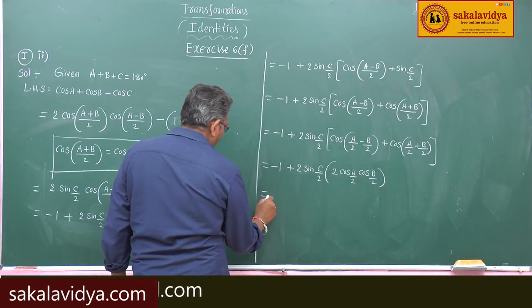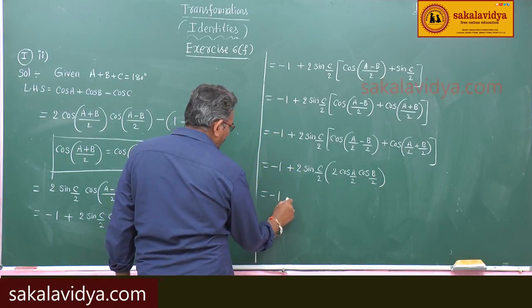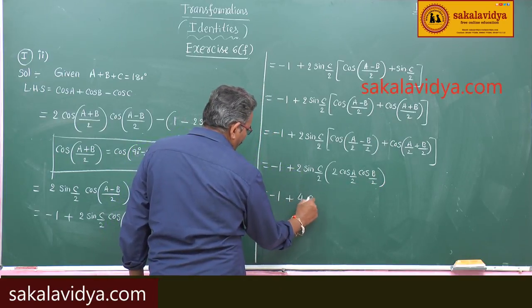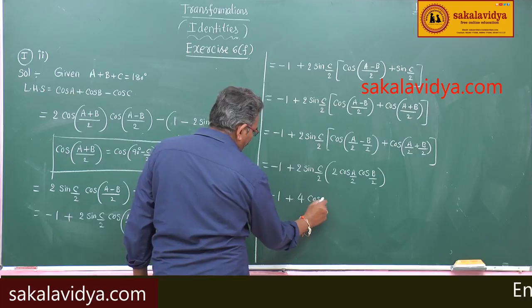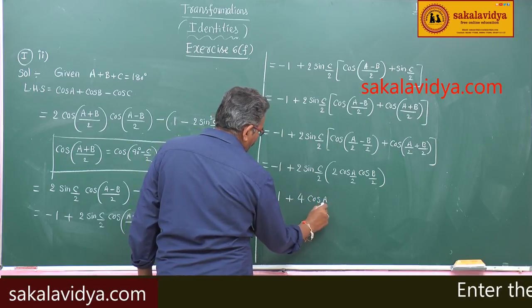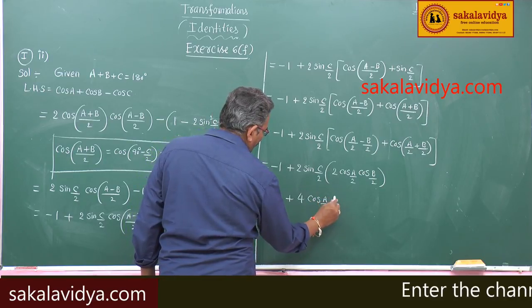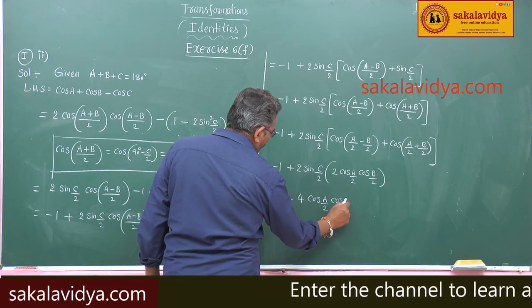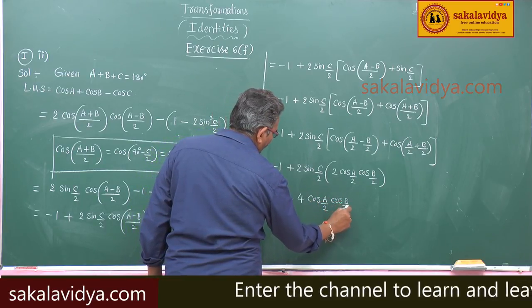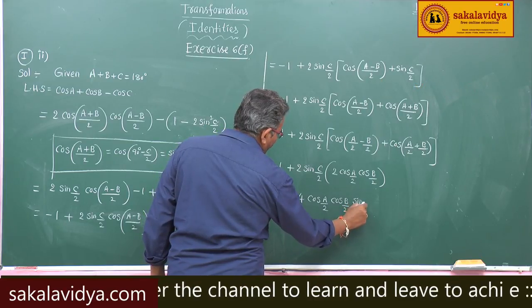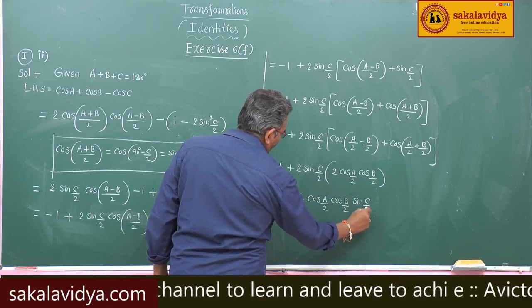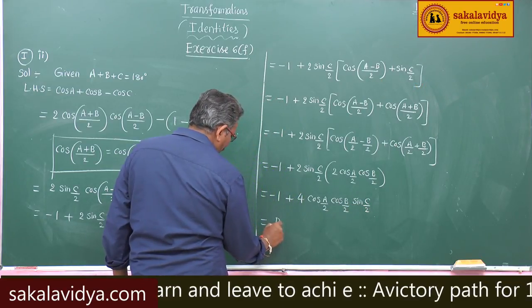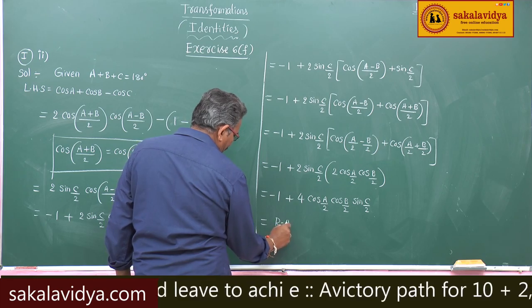This is equal to minus 1 plus 4 cos(a/2) cos(b/2) sin(c/2), which is equal to the right hand side.